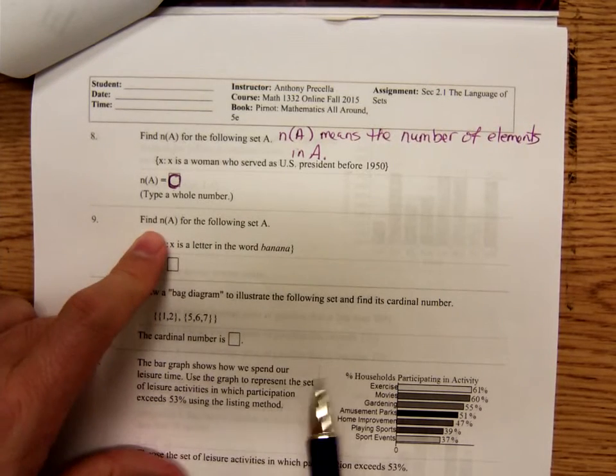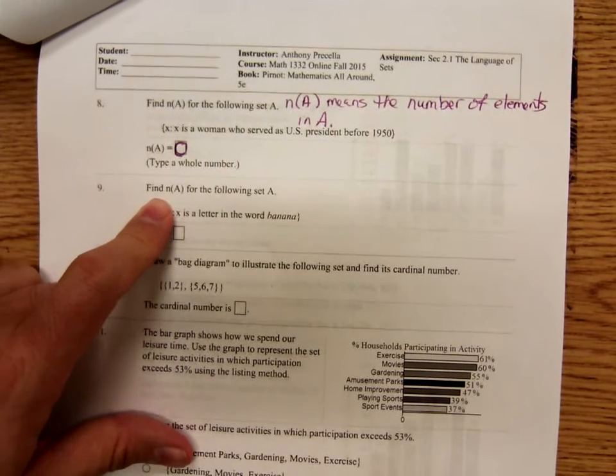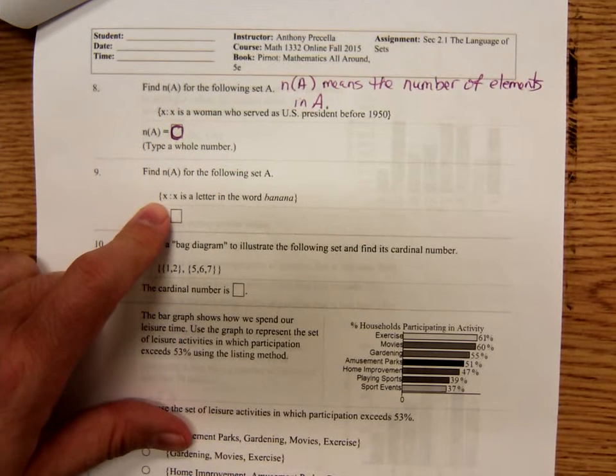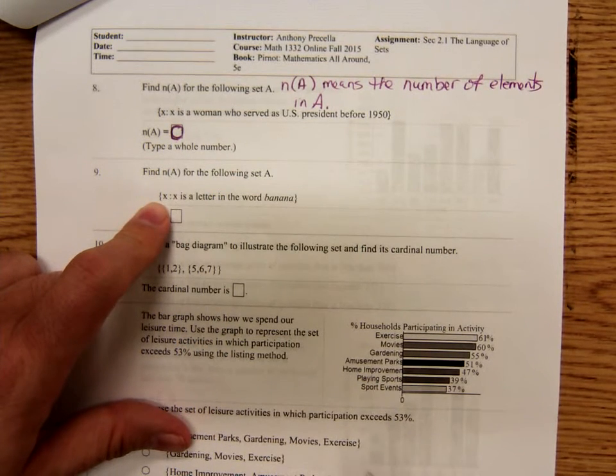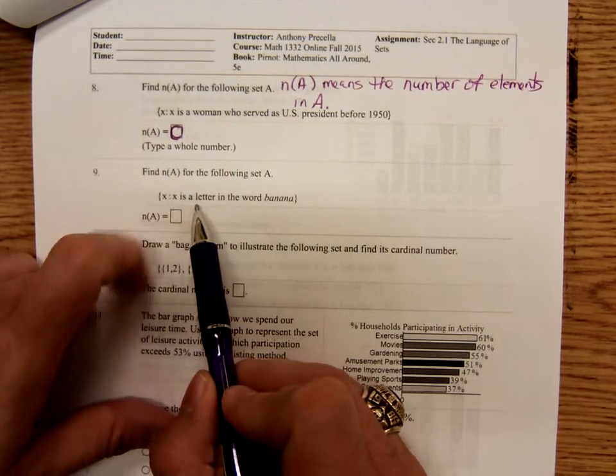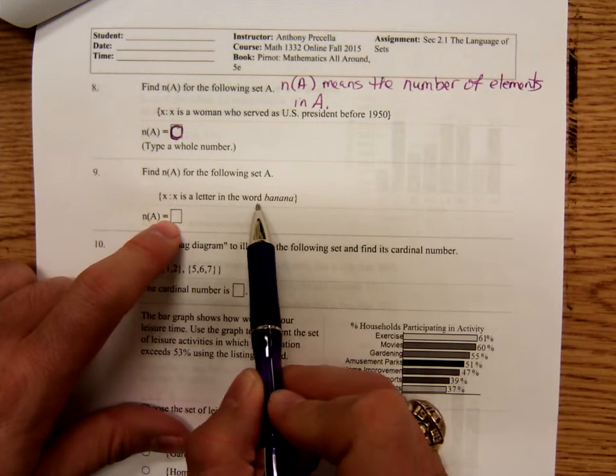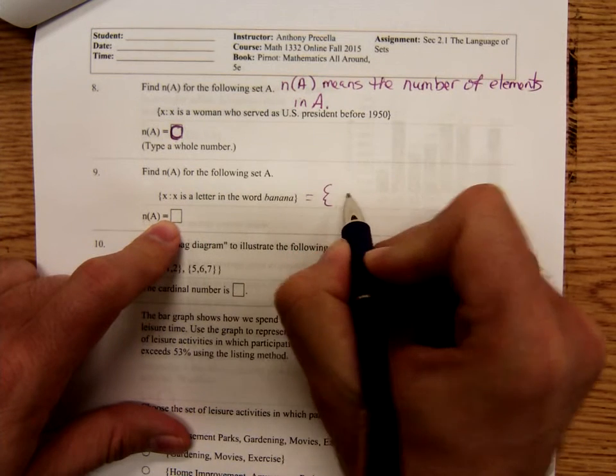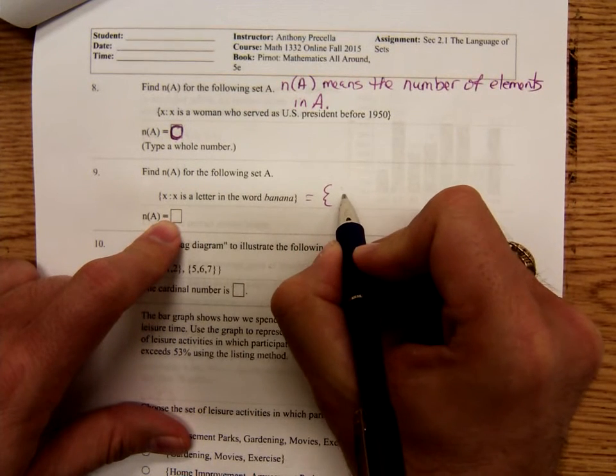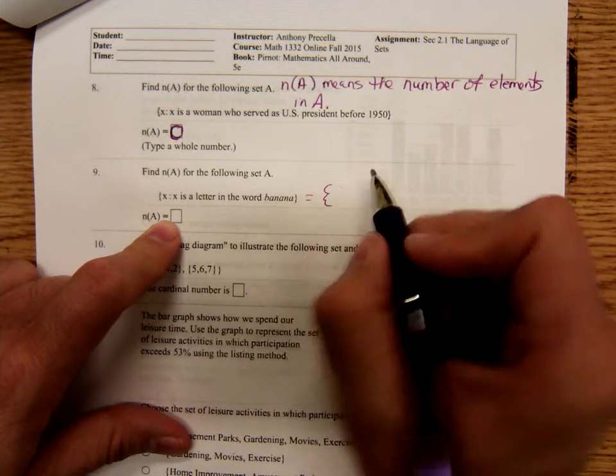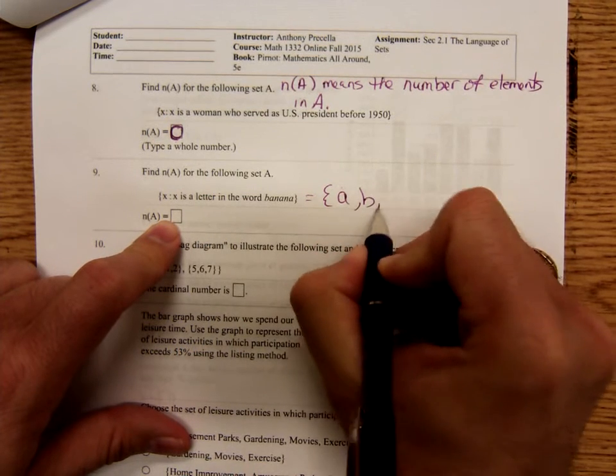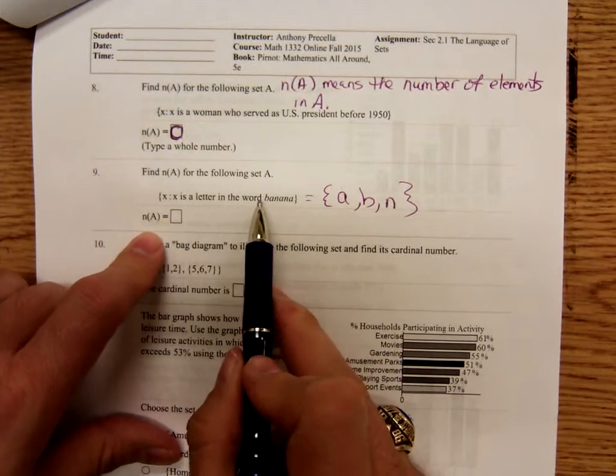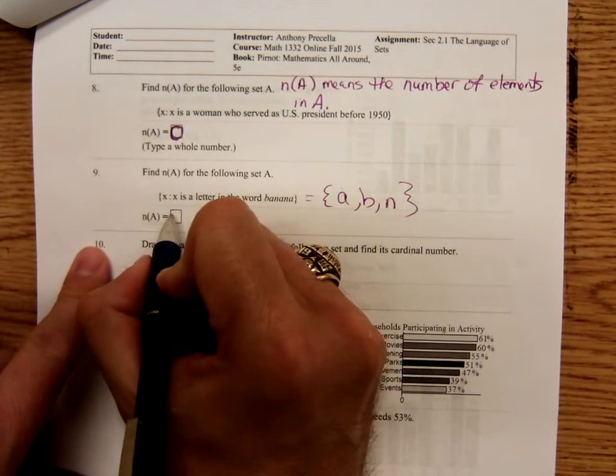Number nine. Find the number of elements for the following set A. Set of all X such that X is a letter in the word banana. Well, let's see. Let's list that out. What are the letters in the word banana? There's a B, A, and N. I'm going to list them in alphabetical order. So I did a half two. How many letters are there in the word banana? Three.